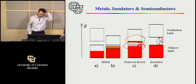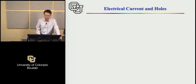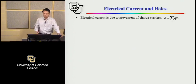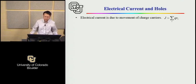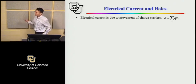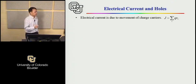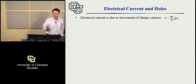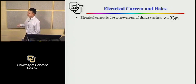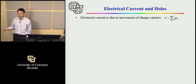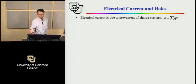If the band gap is very large compared to the thermal energy, not many electrons can jump across the band gap — they remain in the valence band, and these materials are good insulators. Now let me introduce the concept of holes. The electrical current is due to the movement of charge, and particles that carry charge are called charge carriers.